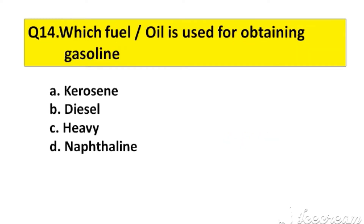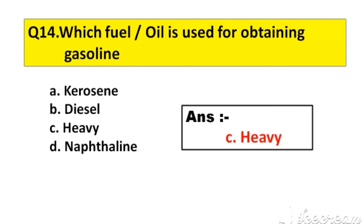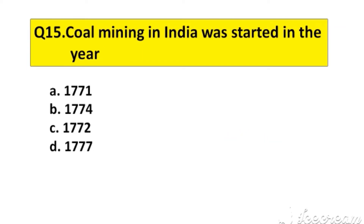Question number 14. Which fuel or oil is used for obtaining gasoline? Option A: Kerosene, B: Diesel, C: Heavy, D: Naphthalene. The right answer is option C: Heavy.